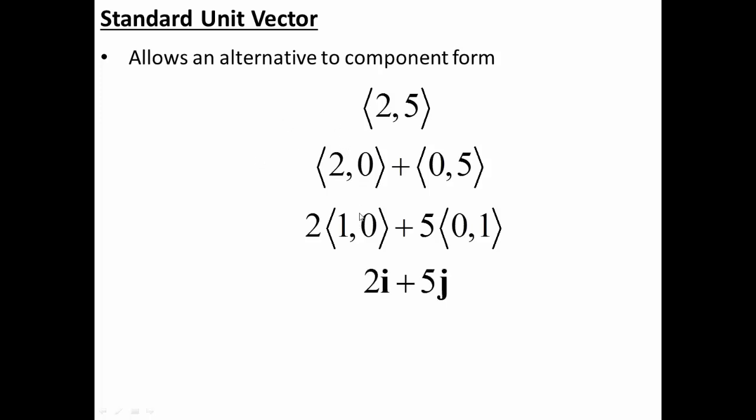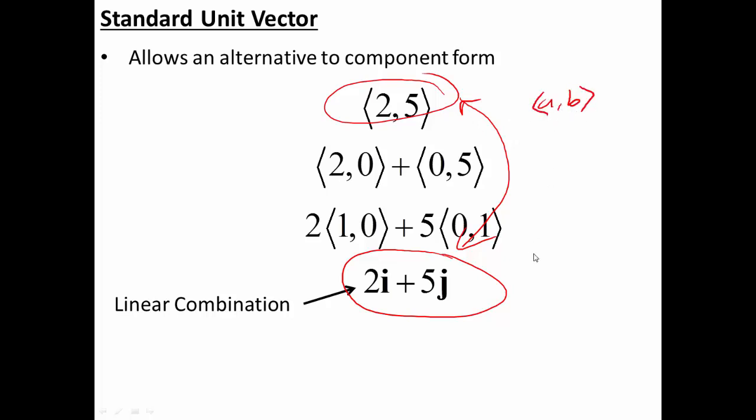(1, 0) is the i vector. (0, 1) is the j vector. So the component form (2, 5) is equivalent to the linear combination of standard unit vectors 2i plus 5j. So it's quite common to jump around between this notation and this notation. They are exactly the same thing. They mean exactly the same thing. If I have a component form (a,b), I could just as easily write it as ai plus bj. They are the same thing.